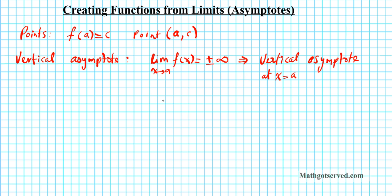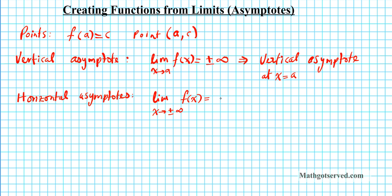The other classification we will look at helps us generate a function using limits: horizontal asymptotes. If you take the limit as x approaches plus or minus infinity of a function and it equals some constant c, then y equals c is a horizontal asymptote.